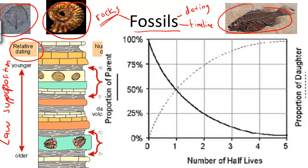The Law of Superposition states that the older a fossilized remain of an organism, the further down it will be located in rock layers. This is because sedimentary rock builds in layers, with younger layers of rock deposited on top of older layers.